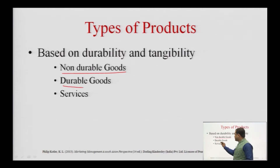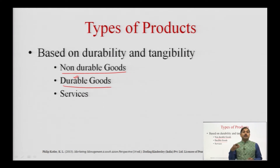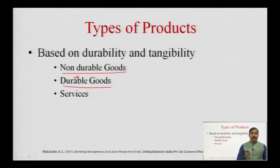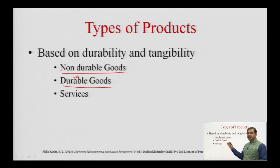The next type is durable goods. Durable goods are tangible goods that survive for a longer duration of time and can be used for many uses — for example, a mobile phone, refrigerator, washing machine, or clothing. Everything that can be used again and again over a longer duration is called a durable good. In terms of marketing, durable goods require more personal selling, higher profit margins so that retailers are interested in pushing the product, and more seller guarantees to assure buyers.